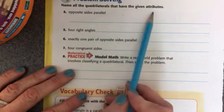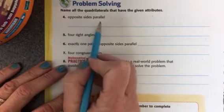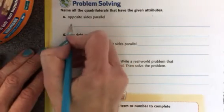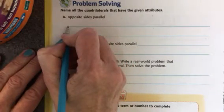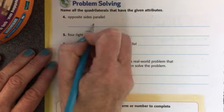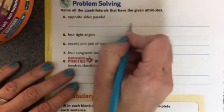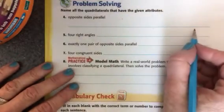Name all the quadrilaterals that have the given attributes. Okay, so which quadrilaterals have opposite sides parallel? Well, I know that a square does, I know that a rectangle does, I know that a rhombus does, and a parallelogram, and a trapezoid. So I'm going to write all of those down.